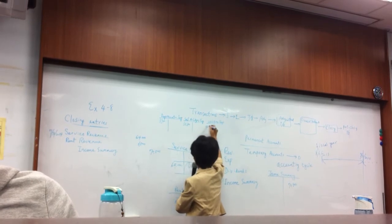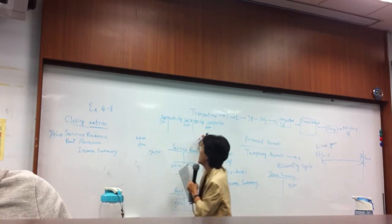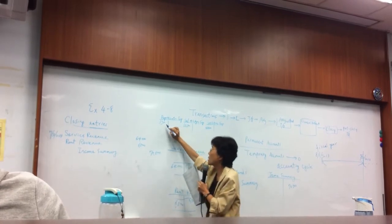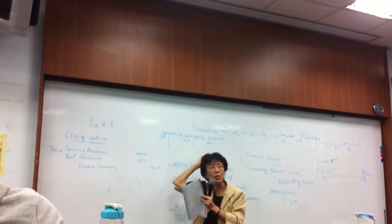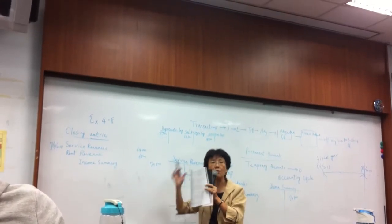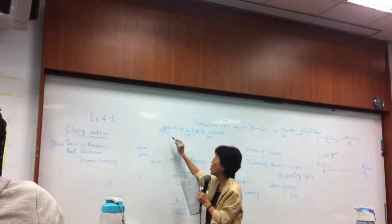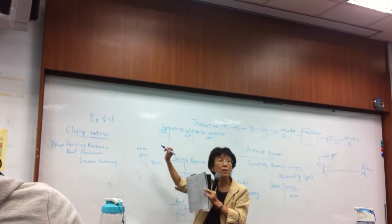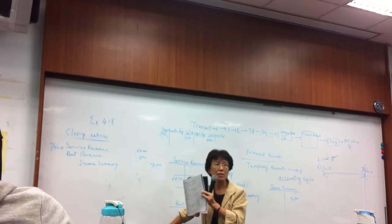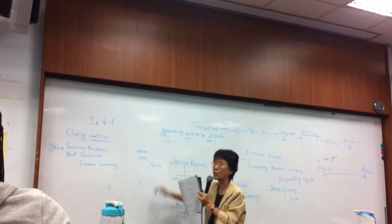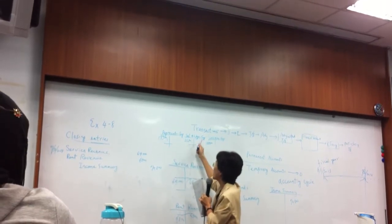Right. Our expense accounts they all have debit balance so this amount here is the depreciation expense for this current accounting period, for this current year fiscal year and so next year we will record something for next year.